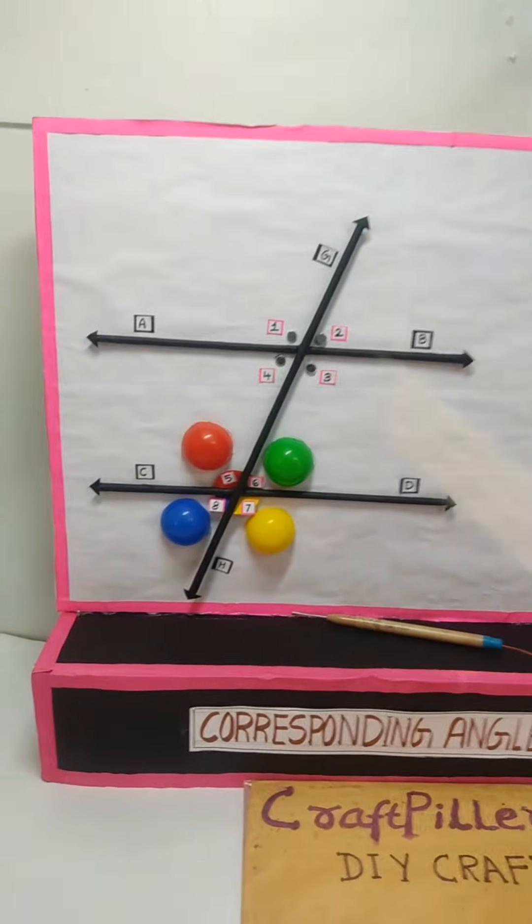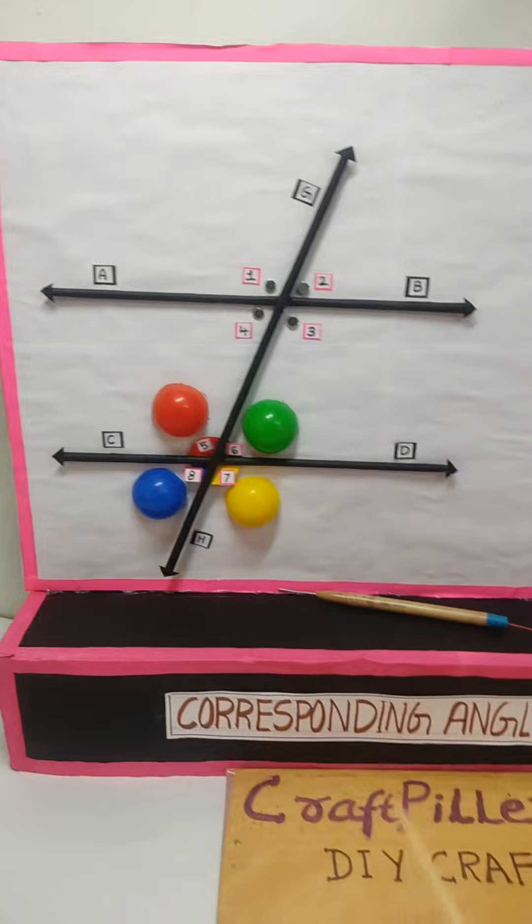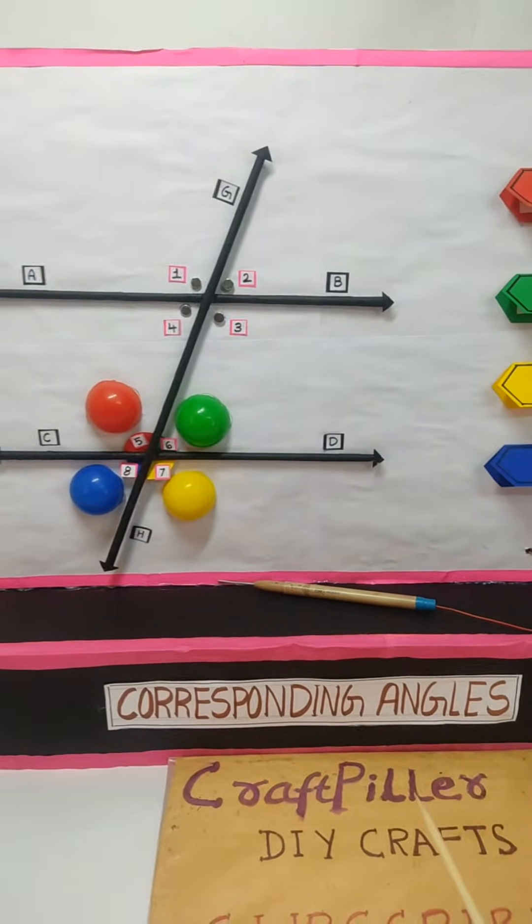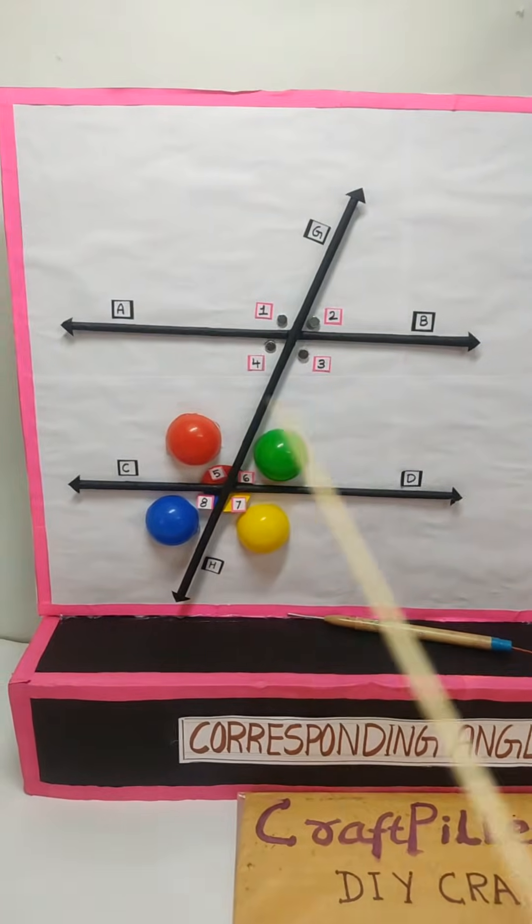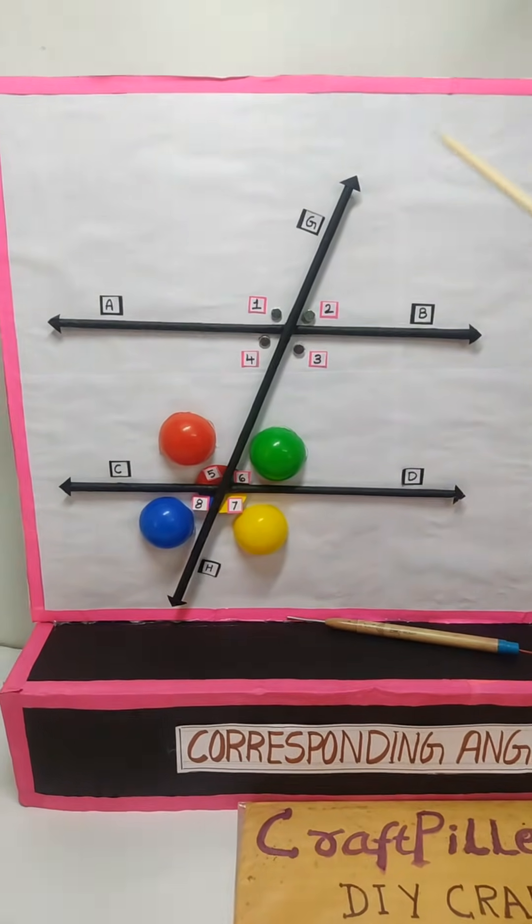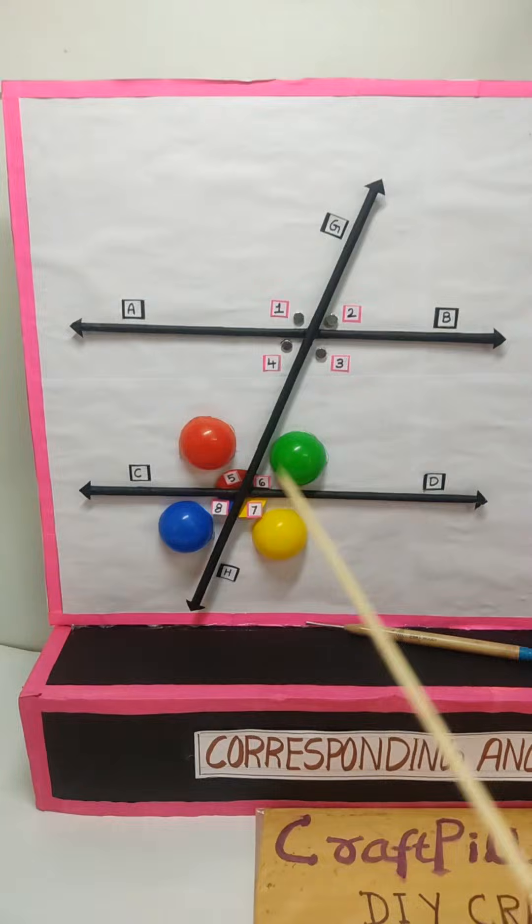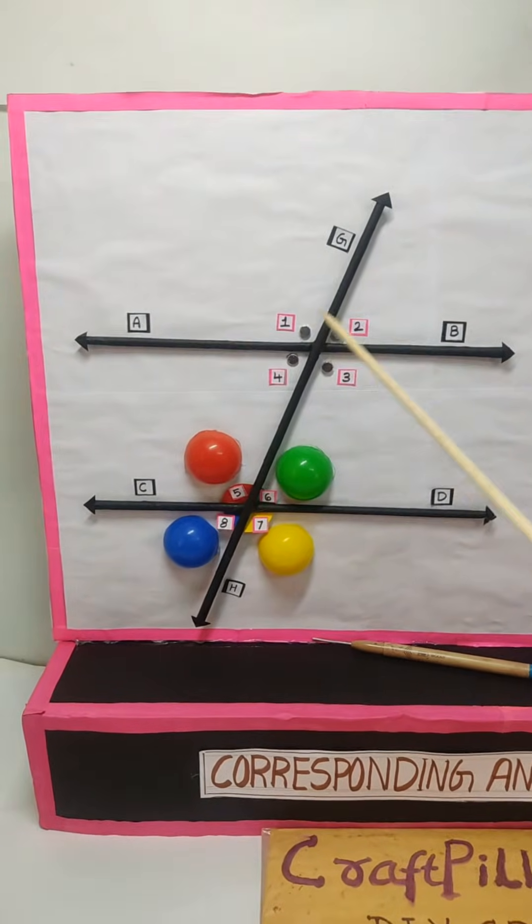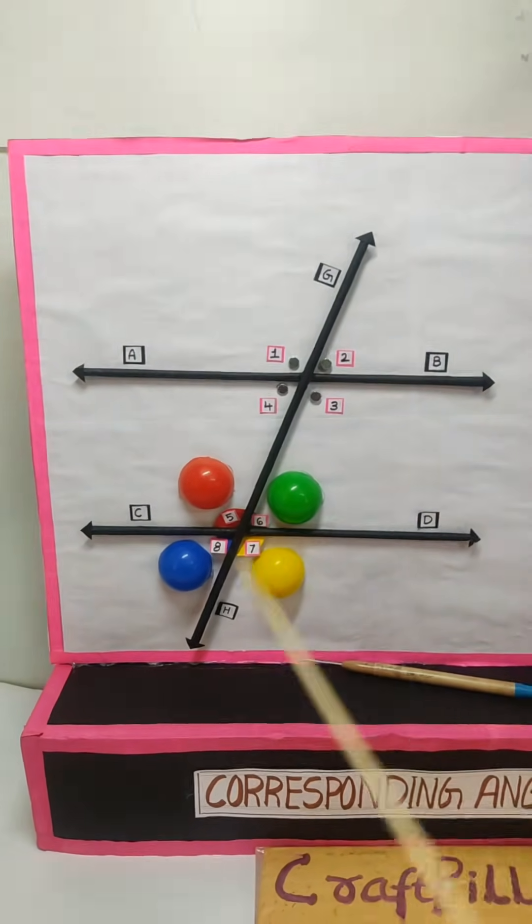Now let me explain you what is all about corresponding angles. When we have two lines which are running parallel, when that line is cut by a transversal, then the angles of these two parallel lines will be the same.